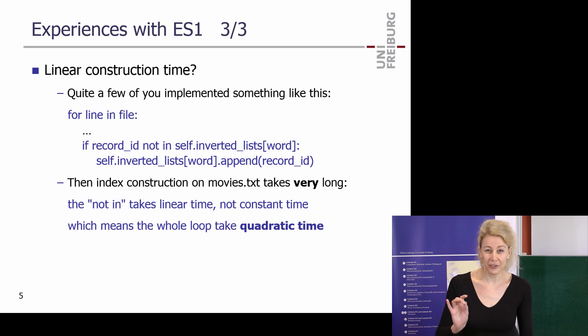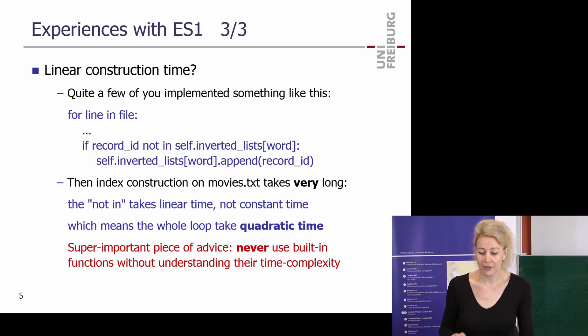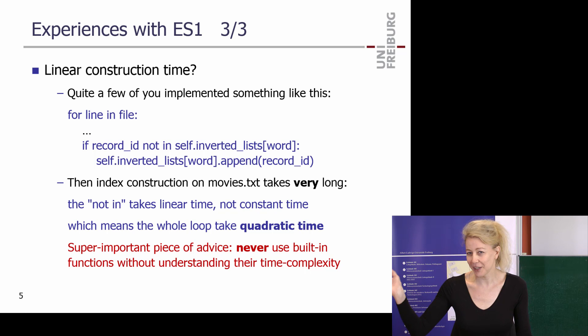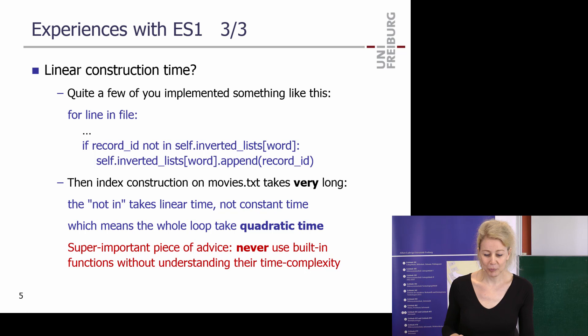This is maybe the single most important piece of advice for your whole study here in computer science: never just use built-in functions and assume they are efficient without knowing the complexity. It's reasonable if you don't know anything about the list, but this is really very common also in code from companies. You really should pay attention to this — I gave the advice and still many of you did it.